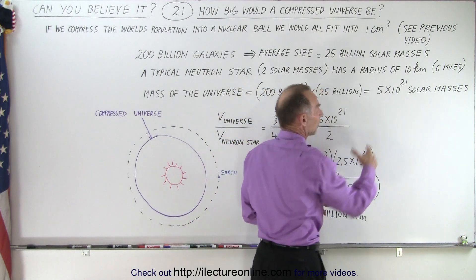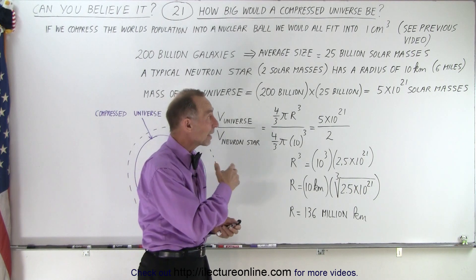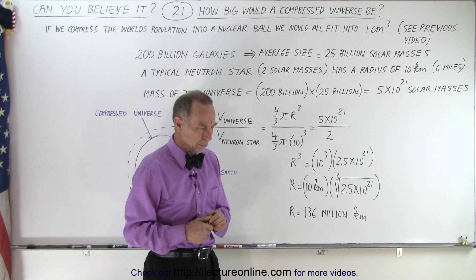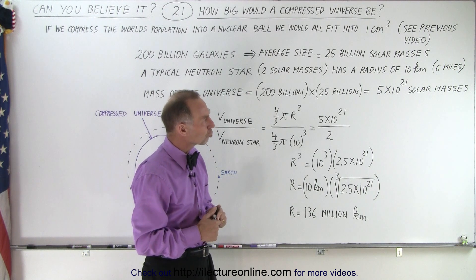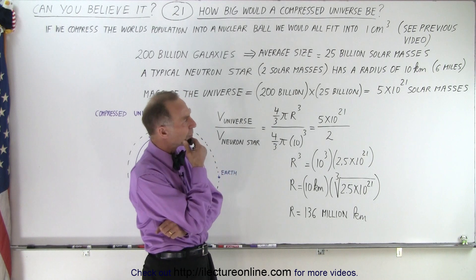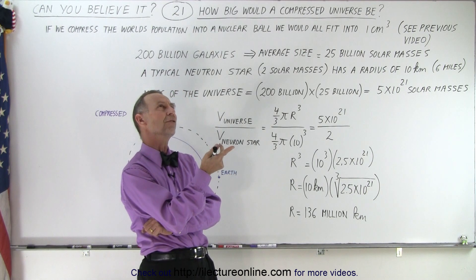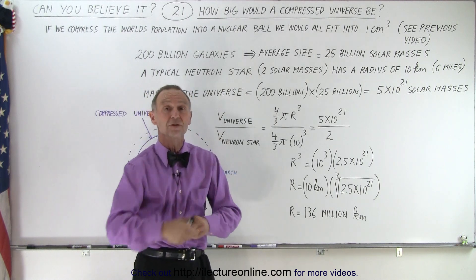The whole universe together of all the visible matter—200 billion or so galaxies—is 5 times 10^21 solar masses. That is 5 billion trillion solar masses, a number that's almost unimaginable.